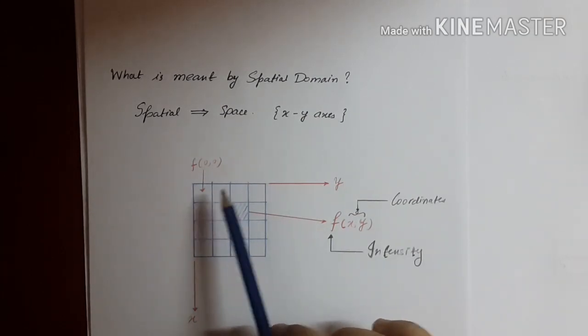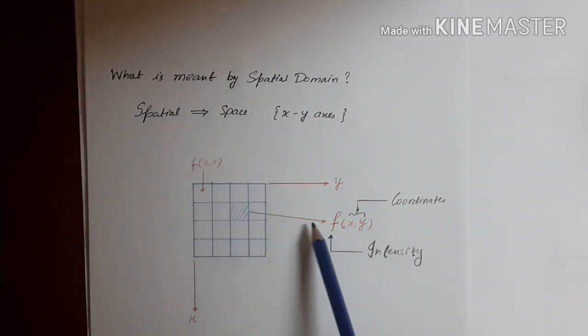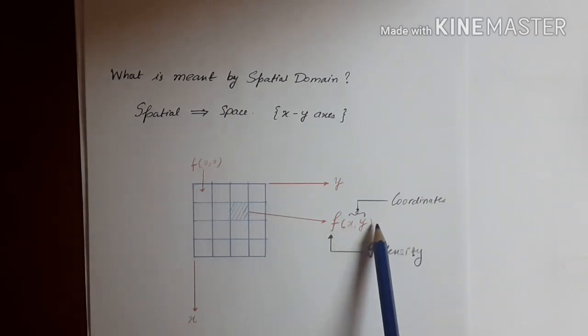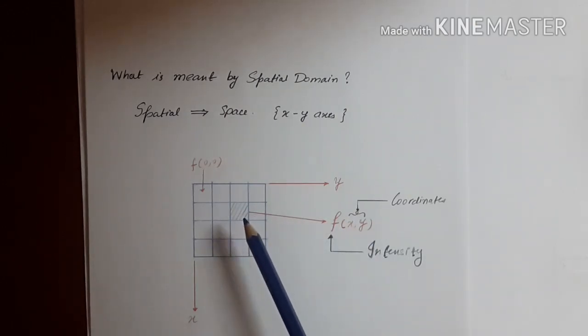To represent a pixel in mathematical form, it is done by writing f(x,y), where f is the intensity of the pixel, and x and y are the coordinates. Each pixel has an intensity.